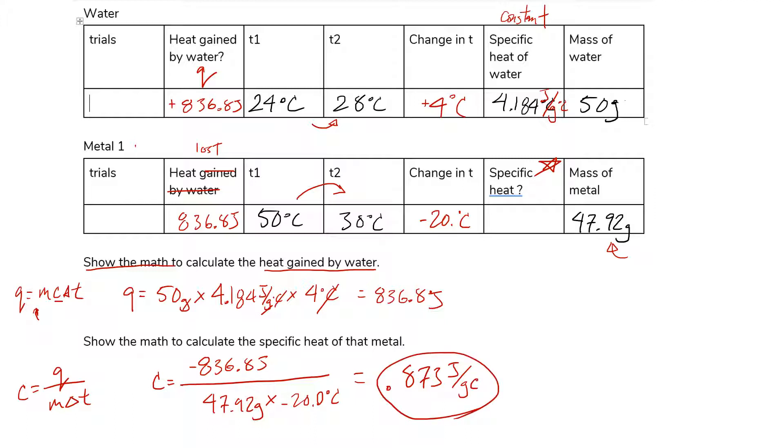All right, 0.873 joules per gram Celsius. And this is a great number because I know that the metal is aluminum. And so it's going to have a specific heat close to 0.89. Thank you very much for watching. Good luck on your lab.